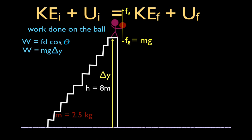Now, the cosine of theta. Theta is the angle between the displacement vector and the force that you apply. The applied force vector and the displacement vector are parallel to each other — they're pointing in the same direction — so theta is 0 degrees. The cosine of 0 degrees is 1. So we have mg·Δy·1, which we just write as mg·Δy. That is the work: the work you do on the ball equals mass times acceleration due to gravity times the change in height.